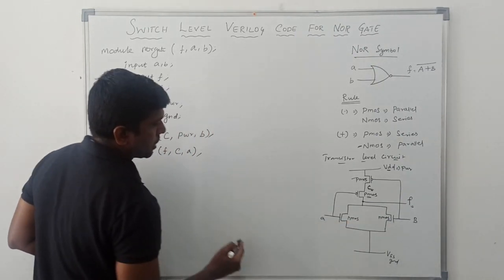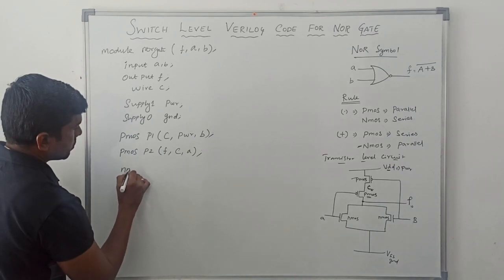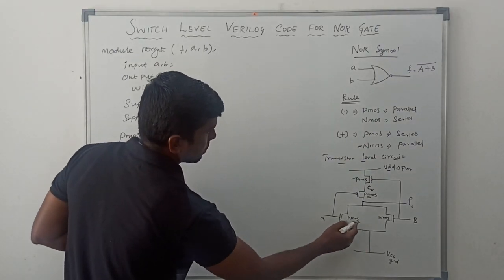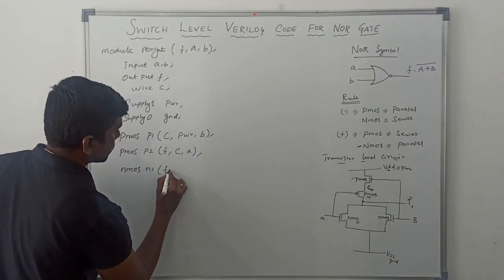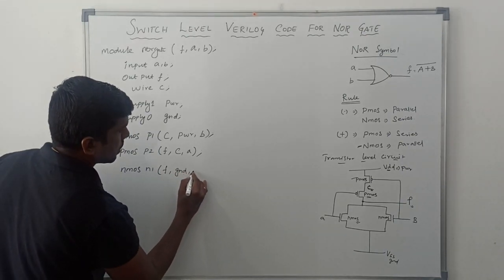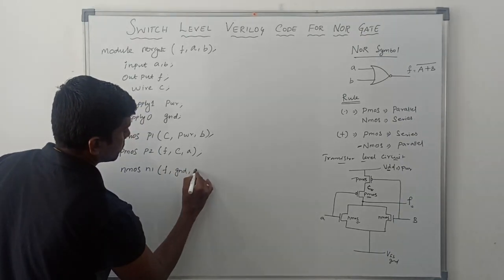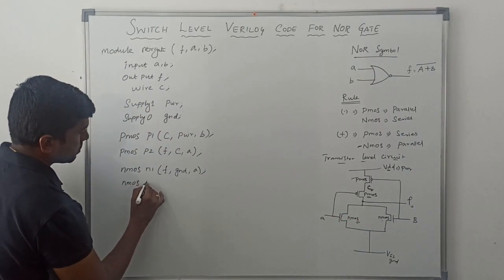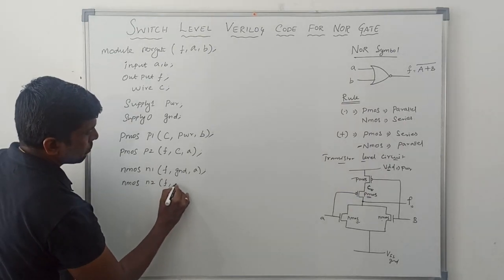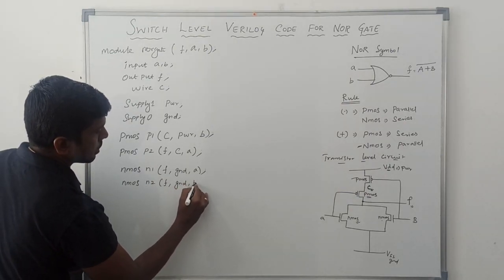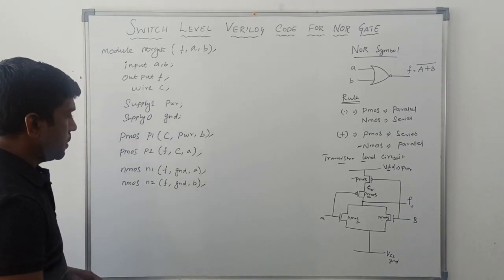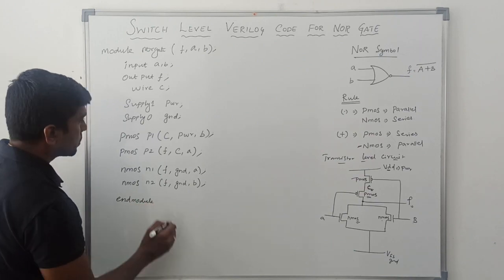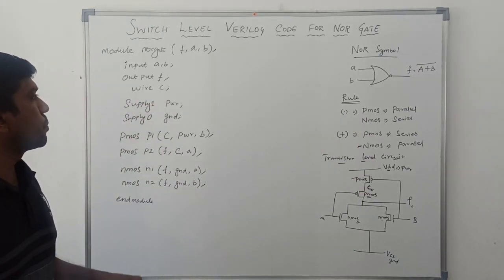Now come to the N-MOS transistors. nmos N1 — considering the first transistor, the output is F, so: nmos N1 (F, ground, A), with A as the controlling input. Then for the second N-MOS transistor: nmos N2 (F, ground, B), with B as the controlling input. Finally, close the module with endmodule. This is the switch level Verilog actual code for the NOR gate.